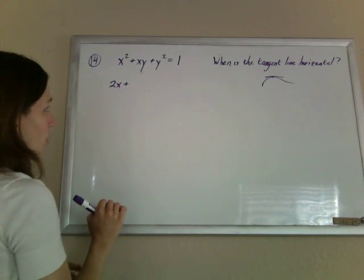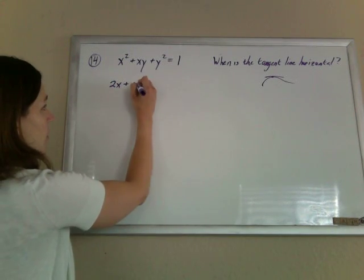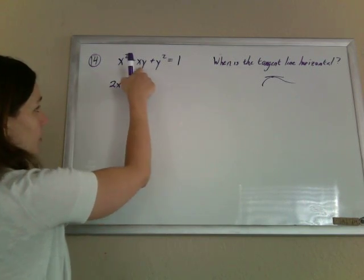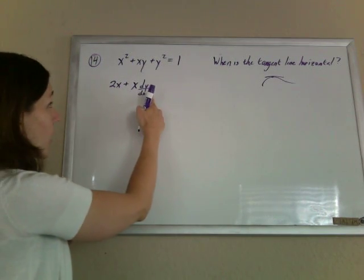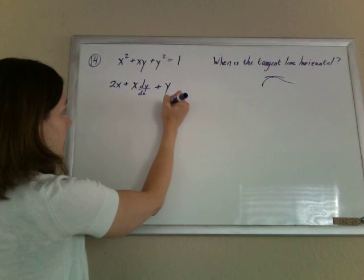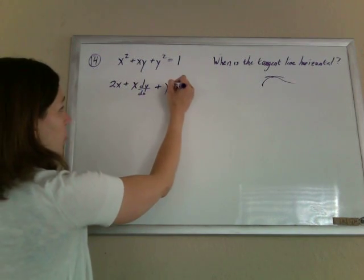Take the derivative of xy, that's product rule. So I have the first times the derivative of the second. The derivative of y is just the derivative of y. Plus the second times the derivative of the first. The derivative of x is just 1.